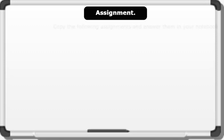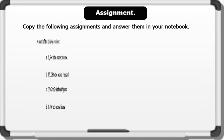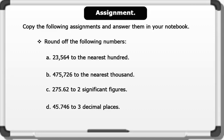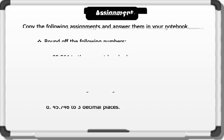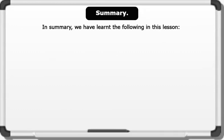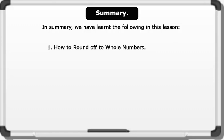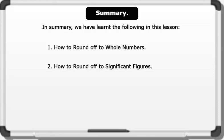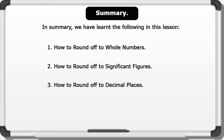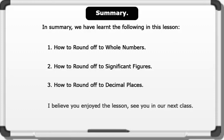Assignment: pause the video, copy the following assignments, and write the answers in your notebook. In summary, we have learned the following in this lesson: one, how to round off to whole numbers; two, how to round off to significant figures; and three, how to round off to decimal places. I believe you enjoyed this lesson — see you in our next one. Thanks and goodbye.